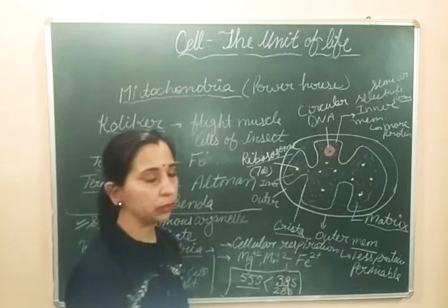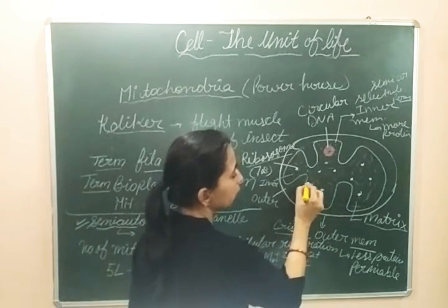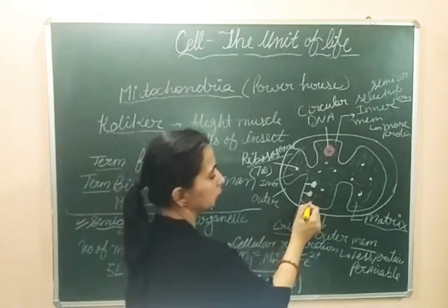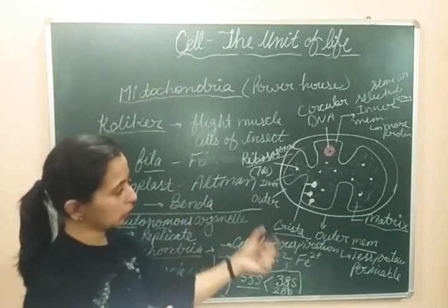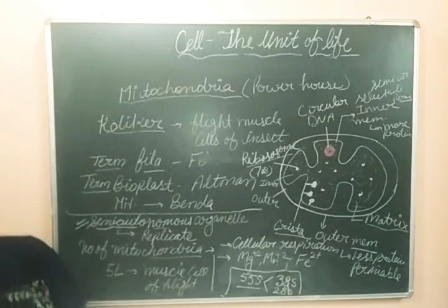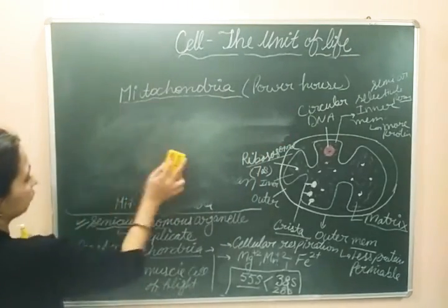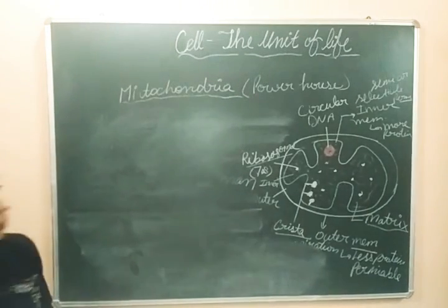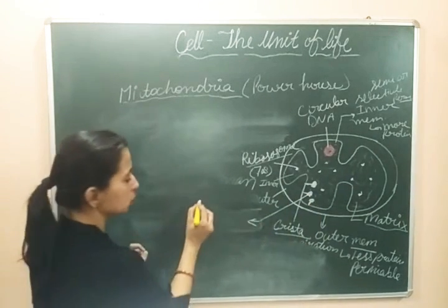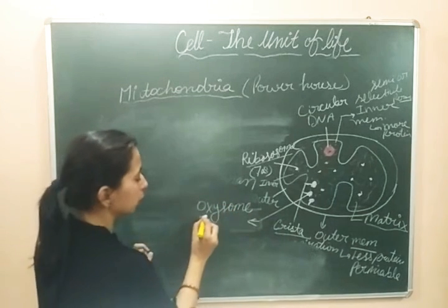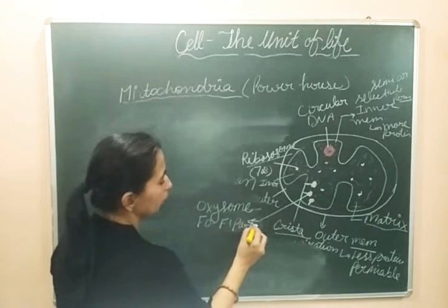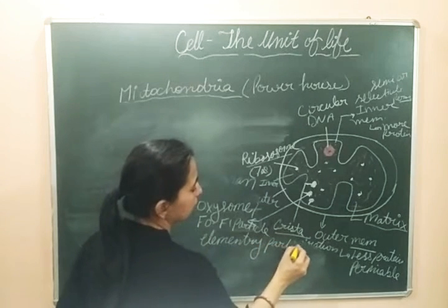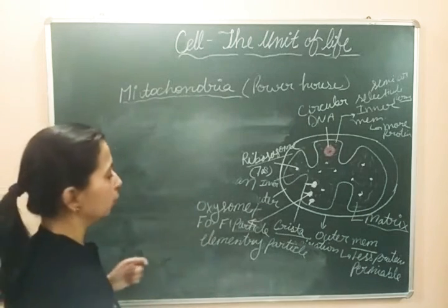On the inner surface of the inner membrane and on the cristae, some particle-like structures are found, evenly distributed. These particles are known as oxysomes, also called F0-F1 particles or elementary particles. These are important structures present on the inner membrane of mitochondria.